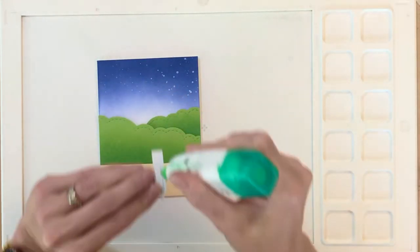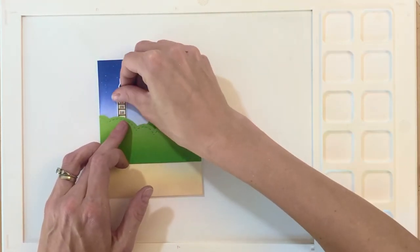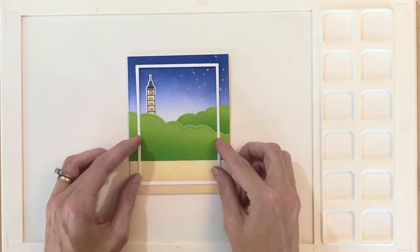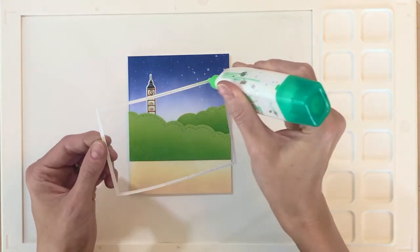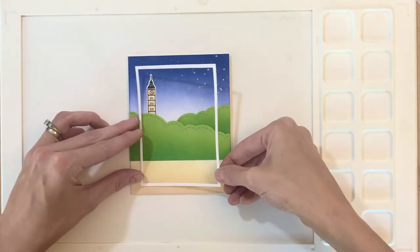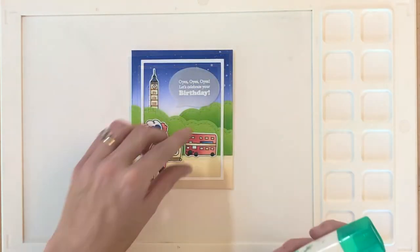Now I'm going to grab Big Ben here, again apply some liquid glue to the back side of him and tuck him behind that first layer of shrubbery. That just gives the illusion that it's really far in the back, which is appropriate for the scale of Big Ben. Now I'm going to add some glue to the back side of my frame and just center that and place that right down on the card front.